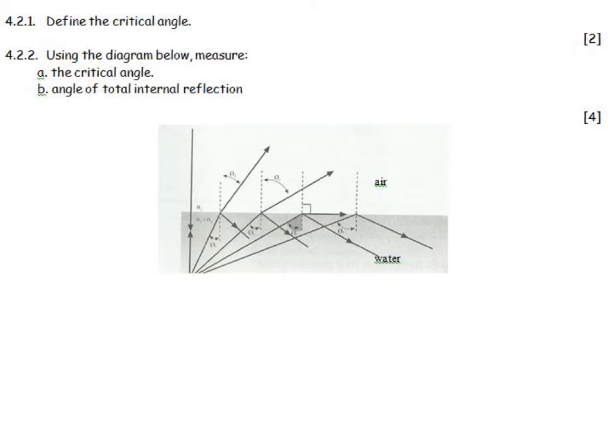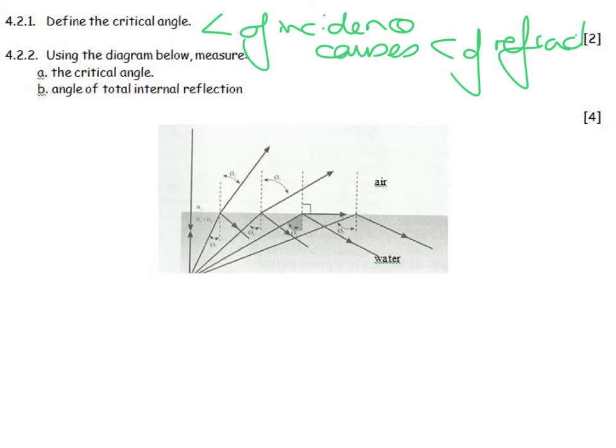Define the critical angle. This is a pure definition in book work. It is the angle of incidence, and you are getting better at it, thankfully. Angle of incidence that causes an angle of refraction of 90 degrees.